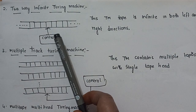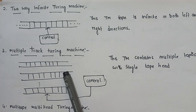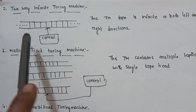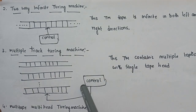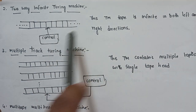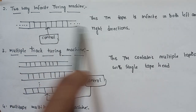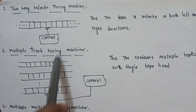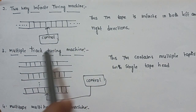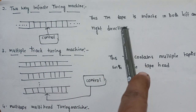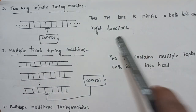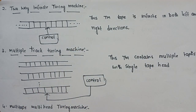The next type of Turing Machine is the Two-Way Infinite Turing Machine. Unlike a standard machine, both the left and right sides of the tape have infinite length — it is endless and continues in both directions. There is one tape head. This Turing Machine is infinite in both left and right directions — that is the Two-Way Infinite Turing Machine.